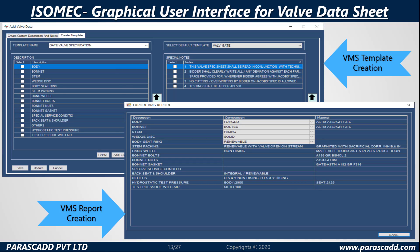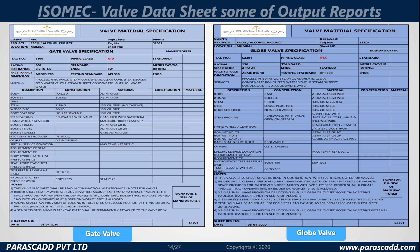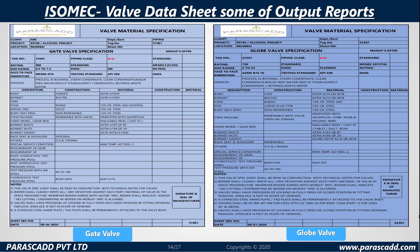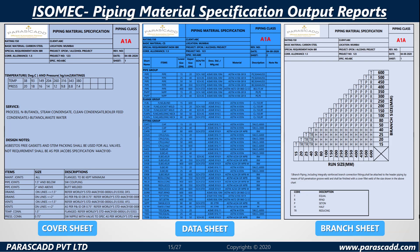The graphical user interface for valve data sheet includes VMS template creation and VMS report creation. Isomec valve data sheet output reports cover the gate valve and the globe valve. Isomec piping material specification output reports offer the cover sheet, the data sheet, and the branch sheet.